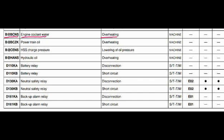Code BCZK: the part is powertrain oil and the problem is overheating. Related to the machine controller. Code BCENS: the part is HSS charge pressure and the problem is lowering of oil pressure. Related to the in-control system.